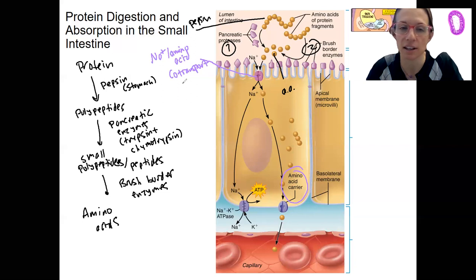So this, again, is secondary active transport. It's just like our glucose. Isn't the sodium gradient cool? It is.